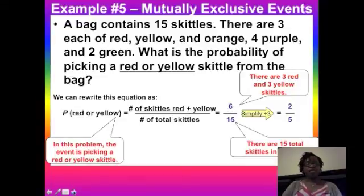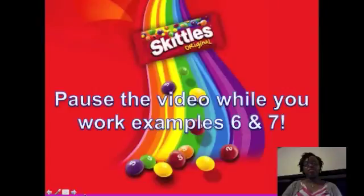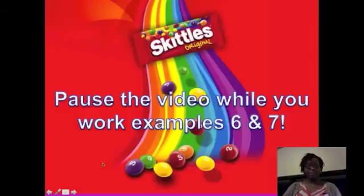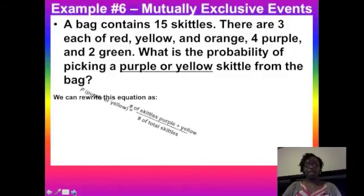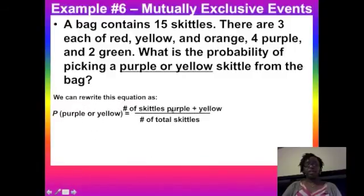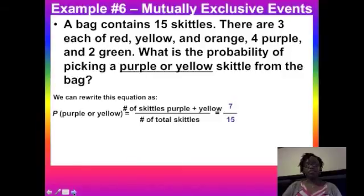In example six you were looking at the probability of getting a purple or a yellow Skittle. Purple or yellow means adding them together: four purple plus three yellow equals seven favorable outcomes out of 15 total, and that cannot be simplified. So the probability is 7/15.